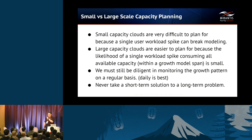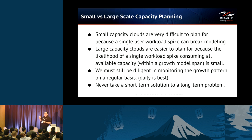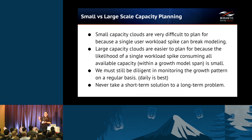Small capacity clouds are very difficult to plan for, for a very simple reason: a user workload spike can break your model. This happens all the time. Anybody who's run a cloud gets a user on there whose application use grows, there's a spike in usage, and all of your available capacity is gone. This is something you want to avoid.